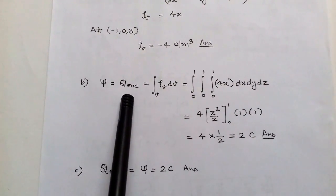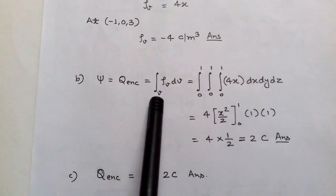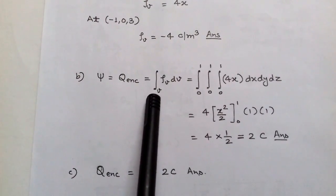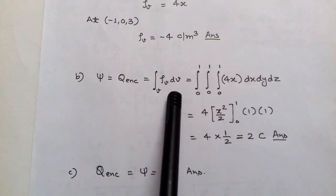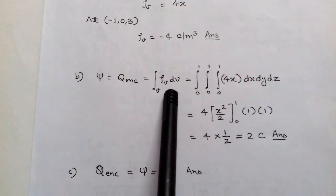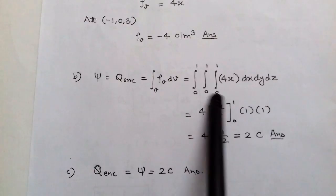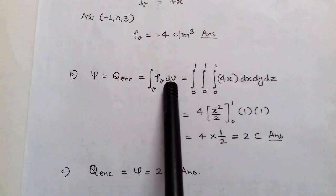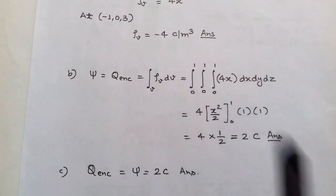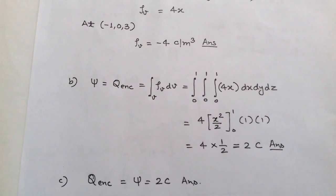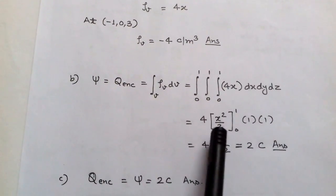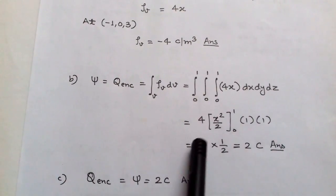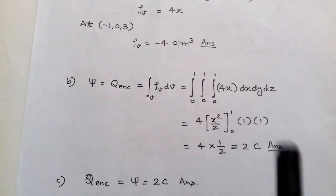For part (b), the flux ψ equals Q enclosed by Gauss's law, and Q enclosed is the volume integral of ρv dV — a triple integral. Since ρv = 4x and dV in Cartesian coordinates is dx dy dz, we take the triple integral of 4x with limits 0 to 1 for each of x, y, and z. After evaluating the integration, we get ψ = 2 coulombs.